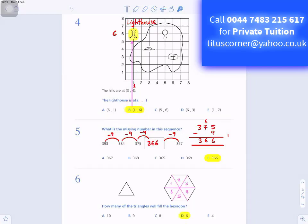Question number 5: What is the missing number in this sequence? So for a sequence of numbers, what do you do to get from 393 to 384? You minus 9. 393 minus 9 is 384. 384 minus 9 is 375. So you subtract 9 each time or you minus 9 each time.